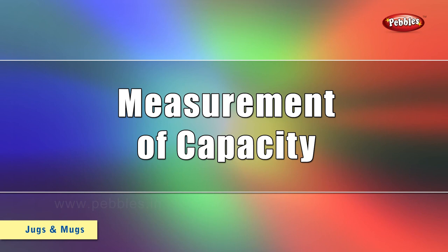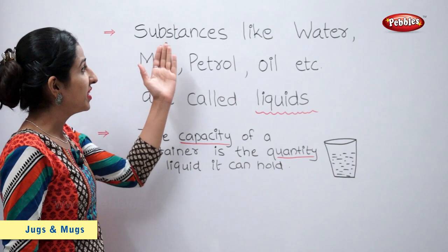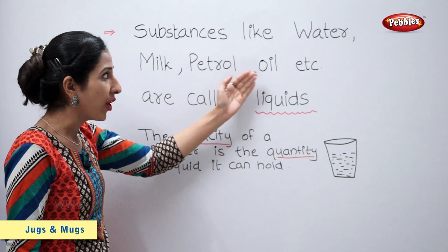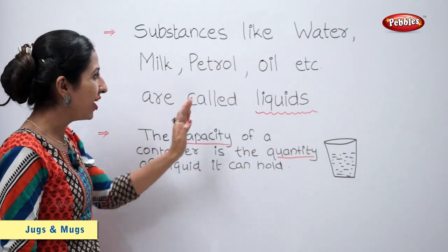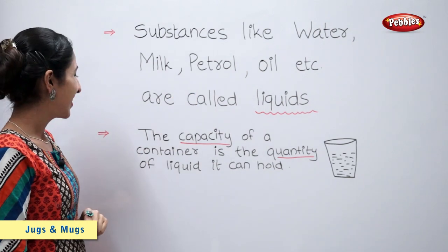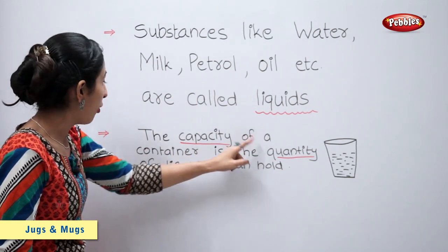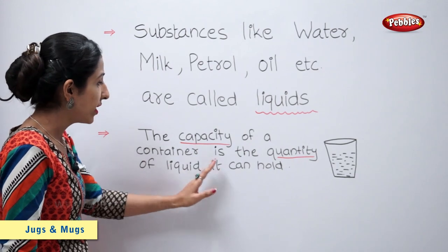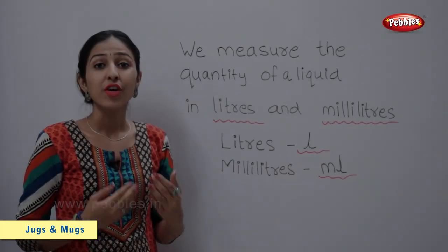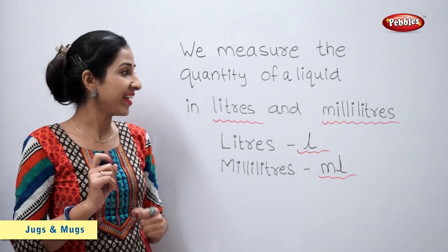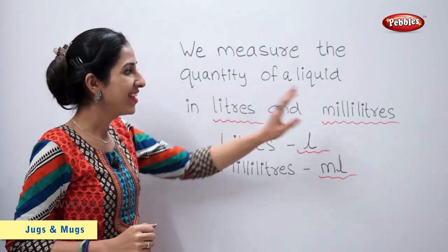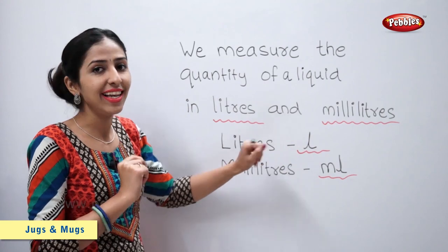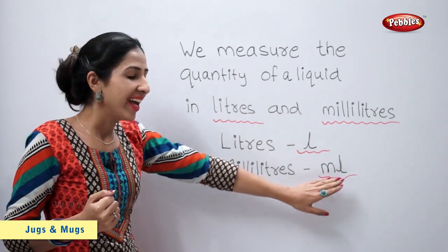Measurement of capacity. Substances like water, milk, petrol, oil etc are called liquids. The capacity of a container is the quantity of liquid it can hold. We measure the quantity of a liquid in litres and millilitres. Litres are denoted by L and millilitres are denoted by ml.